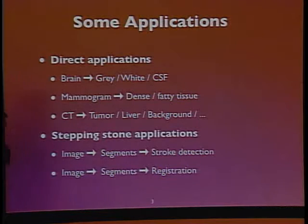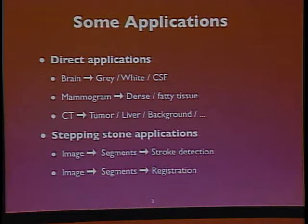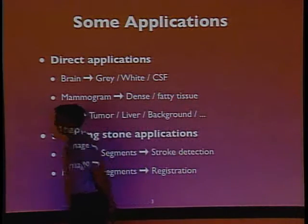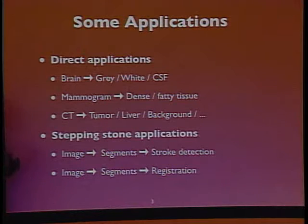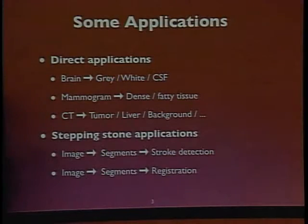This is one of the really cornerstone applications of image processing in all three areas: two-dimensional photography, range data, radar data analysis, and volumetric data. There are direct applications where once you assign pixels into categories you're done, and there are also cases where you think of these as halfway points — getting an image into segments as a stepping stone to somewhere else.